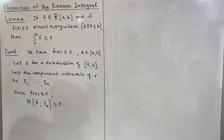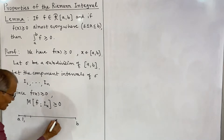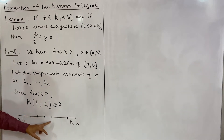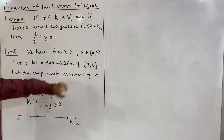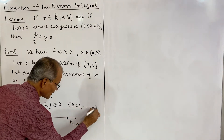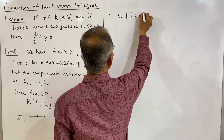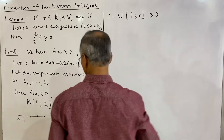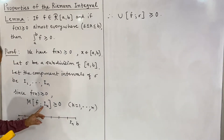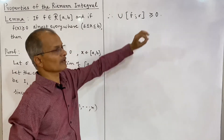We have taken subdivision sigma for this interval a to b, and the component intervals are i1 up to in. The maximum value of f on each interval is greater than or equal to 0 because f ≥ 0 for all values of x in [a, b]. Thus the maximum value of f on i_k is ≥ 0 for k = 1 to n. Therefore, the upper sum of f on subdivision sigma is also ≥ 0, since the upper sum is the sum of the maximum value of f on i_k times the length of i_k.